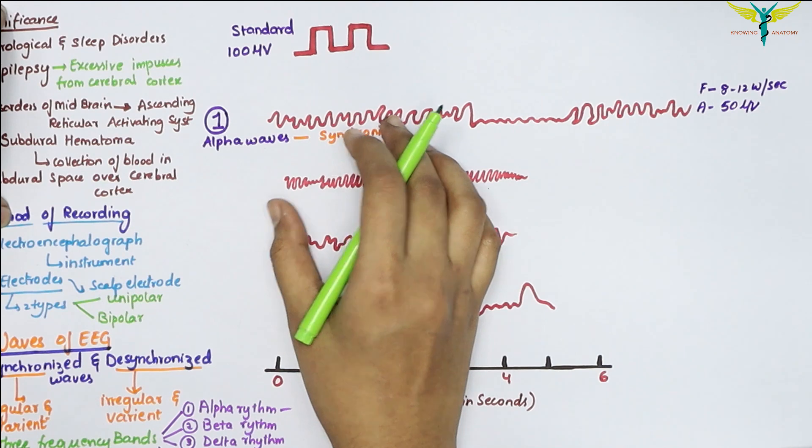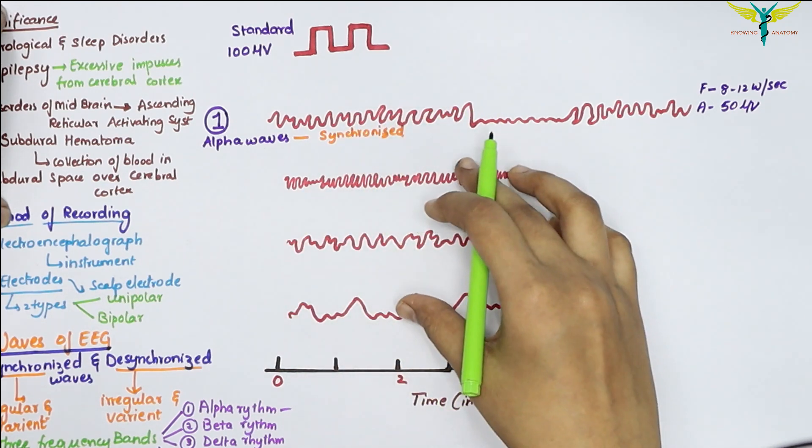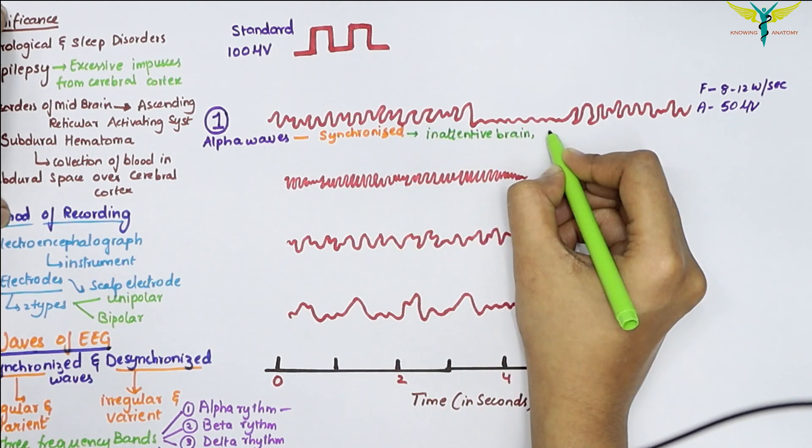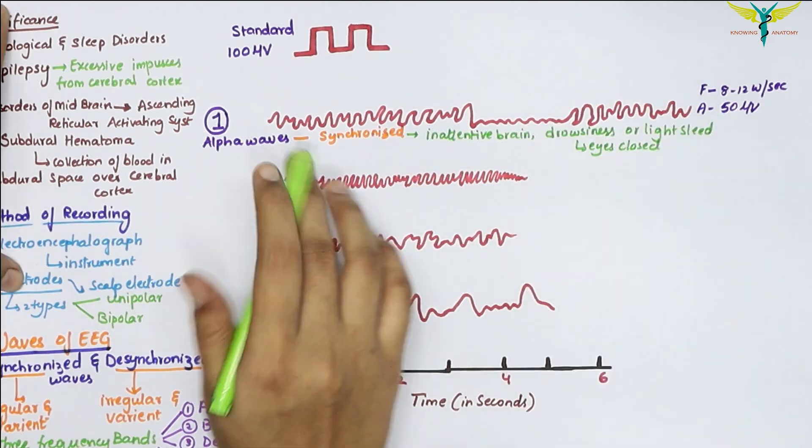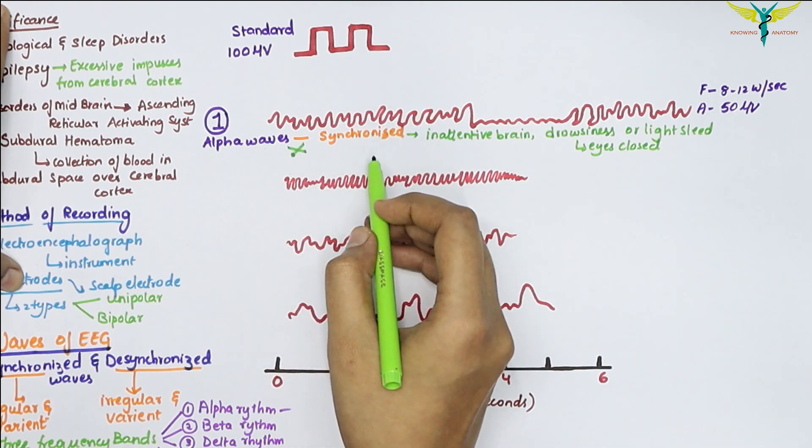When the person is in closed eyes, the alpha waves can be abolished by visual stimuli or by mental effort. It diminishes when the eyes are open.